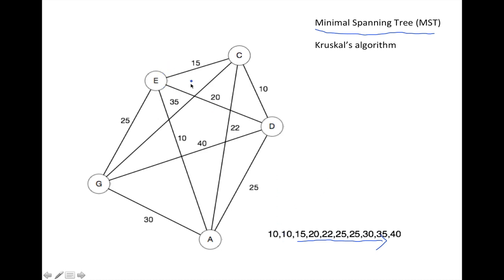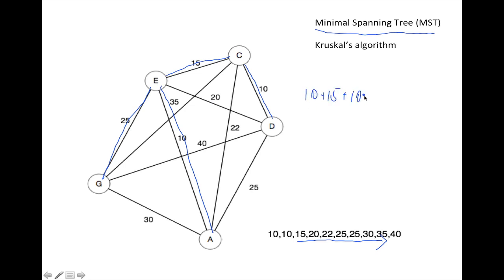So we start: 10, we add this one — good. We add this one — good. 15, we add this one — good. Now we want to add 20, but that would create a cycle, so we don't do that. 22 would create a cycle too, so we skip it. Finally we have 25: this 25 would create a cycle, but this 25 will not. We have four edges and we reach all the nodes, so this is a minimal spanning tree, and its total weight is 10 + 15 + 10 + 25, which equals 60.